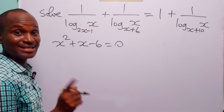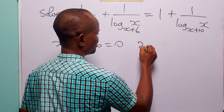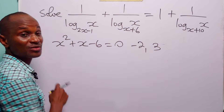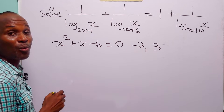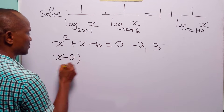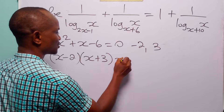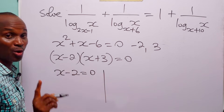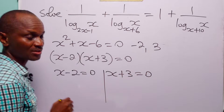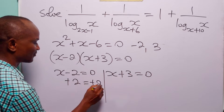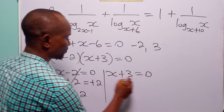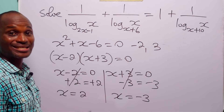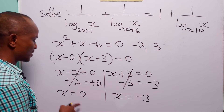We can solve this quadratic by factorization. Since the coefficient of x squared is 1, we need factors of minus 6 that add up to plus 1. Those are minus 2 and plus 3, since minus 2 times 3 is minus 6 and 3 minus 2 equals 1. So we factorize as (x minus 2)(x plus 3) equals zero, giving x equals 2 or x equals minus 3.